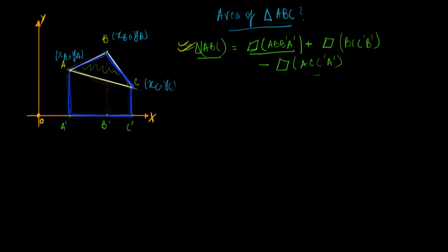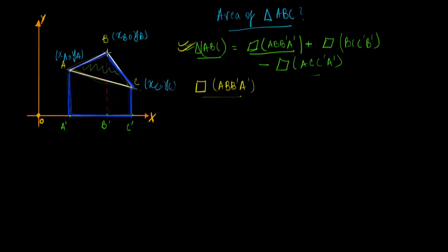Now that we know the area can be broken down this way, we just need to evaluate the areas of the quadrilaterals. Let's tackle one quadrilateral at a time — quadrilateral ABB'A'. You may be thinking we don't know how to work out areas of triangles in the first place, let alone quadrilaterals. But if you realize that the lines dropped from B, A, and C — the dashed ones — are all parallel, then two sides of quadrilateral ABB'A' are parallel, making it a trapezium.